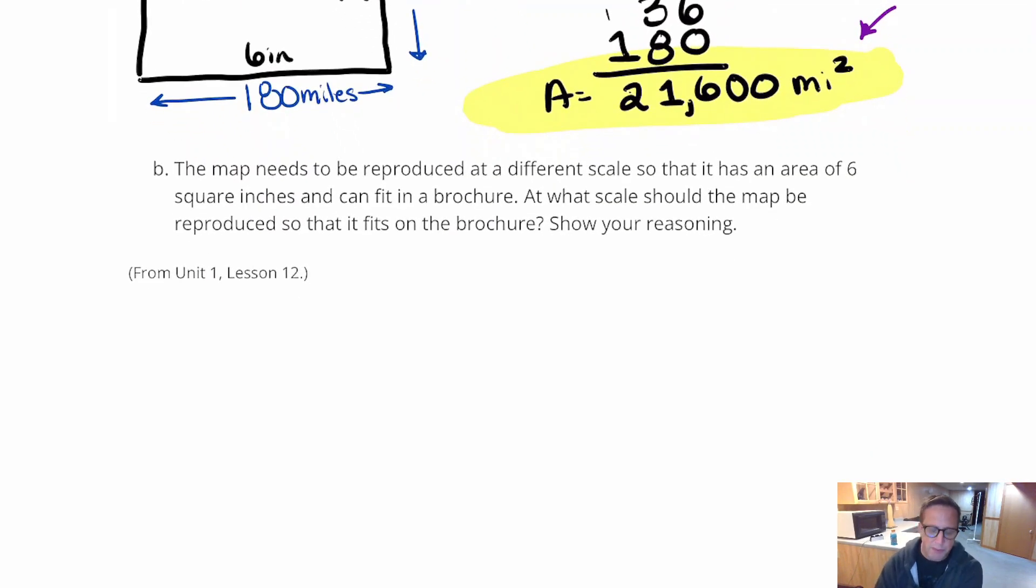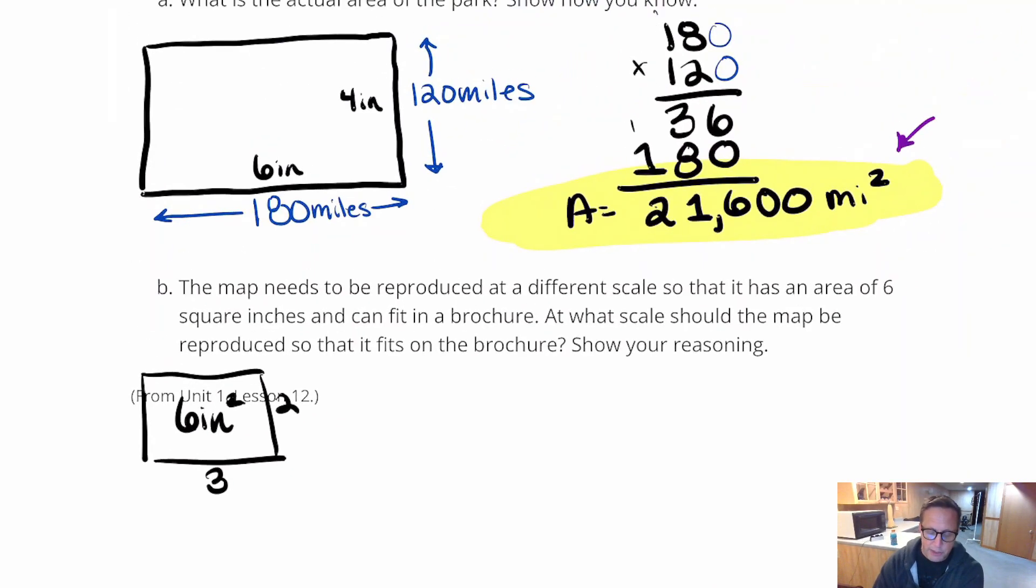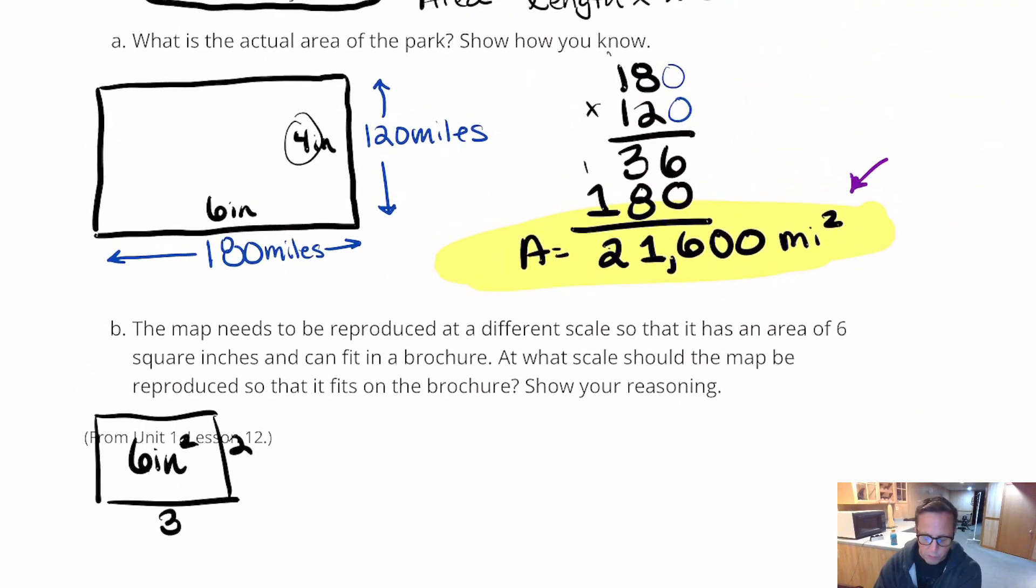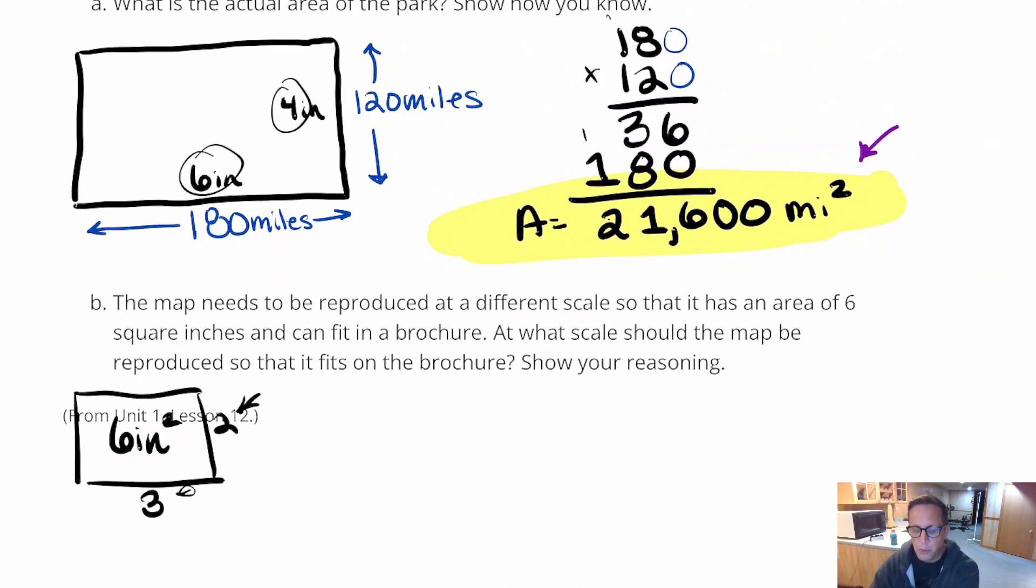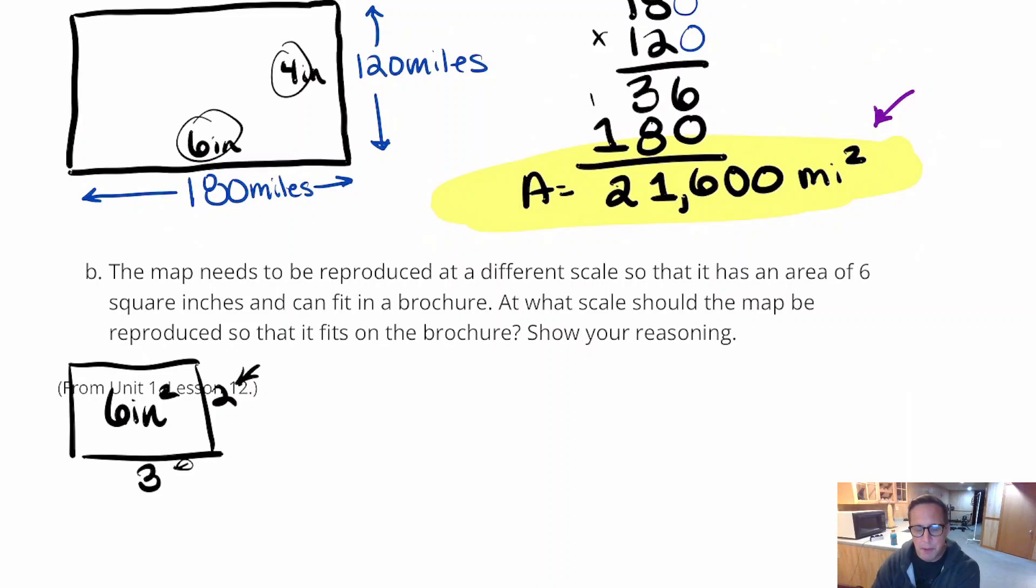If you have a rectangle that is 2 by 3, that has an area of 6 square inches. And that matches the scale here, because half of 4 is 2 and half of 6 is 3. If we compare this area, 6 square inches with the area we got up here, 21,600, it might be helpful to see how many times it goes into it. So if we divide, let's say we do 21,600, and divide that by 6. You get 3,600.